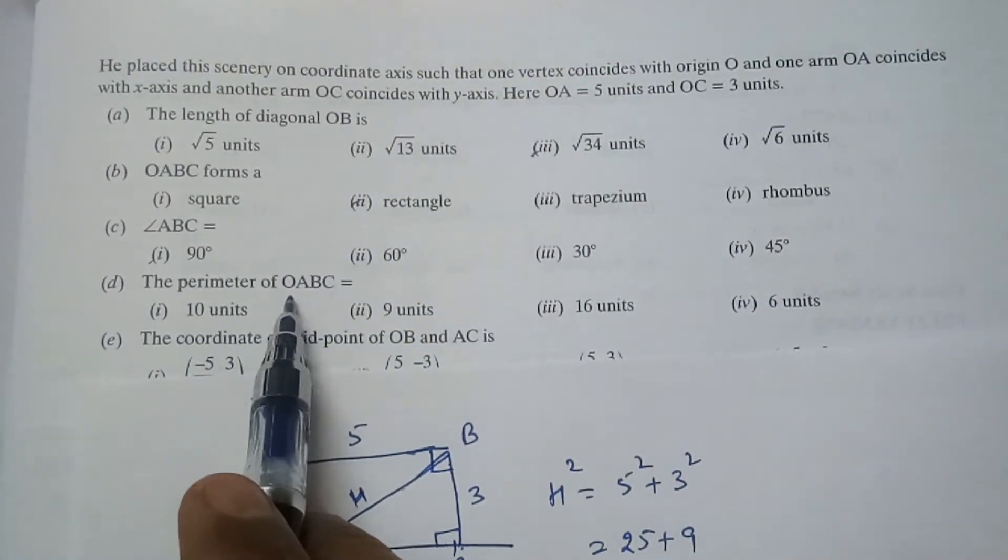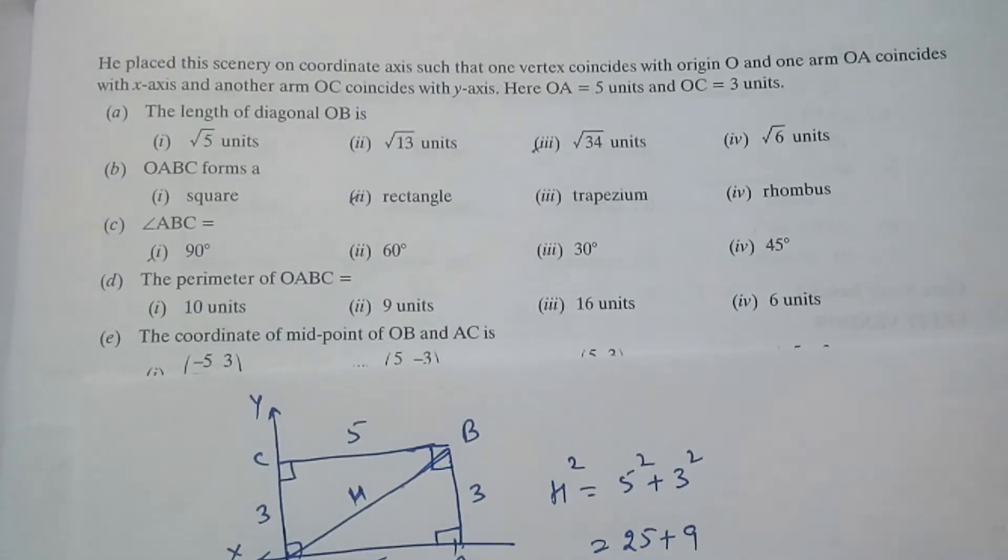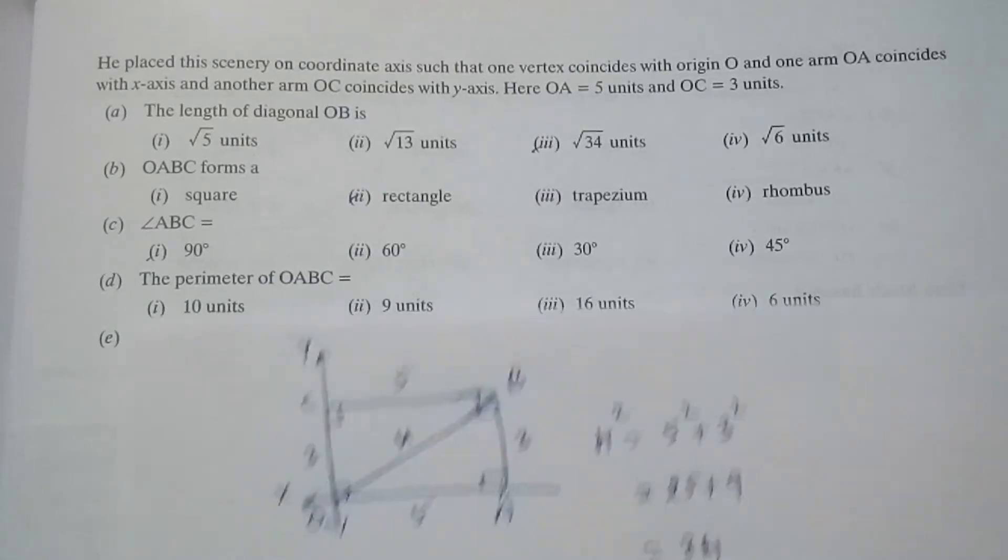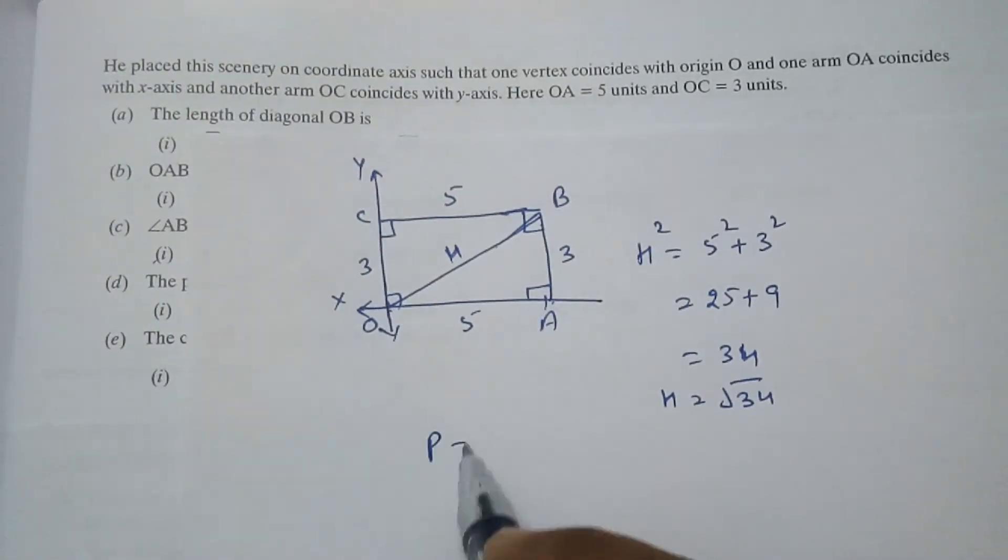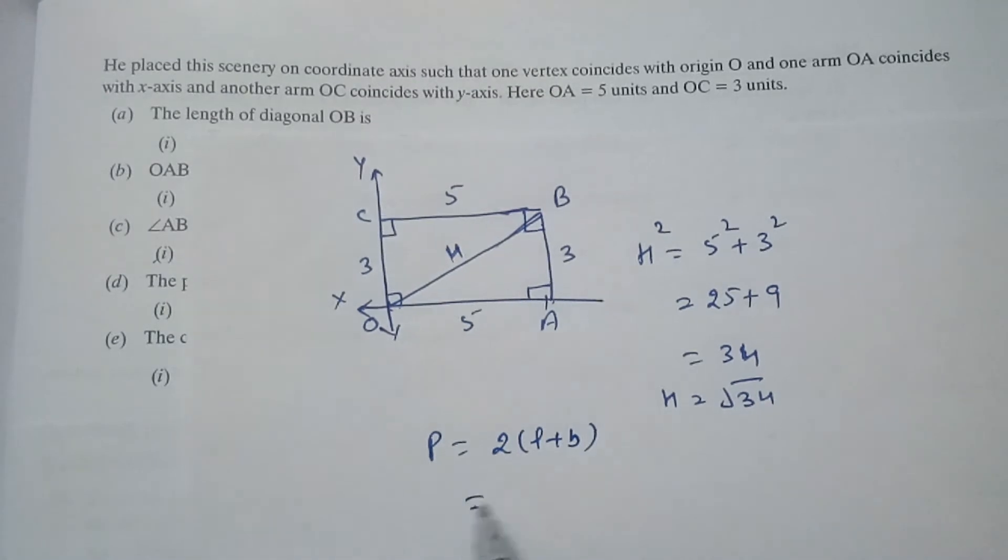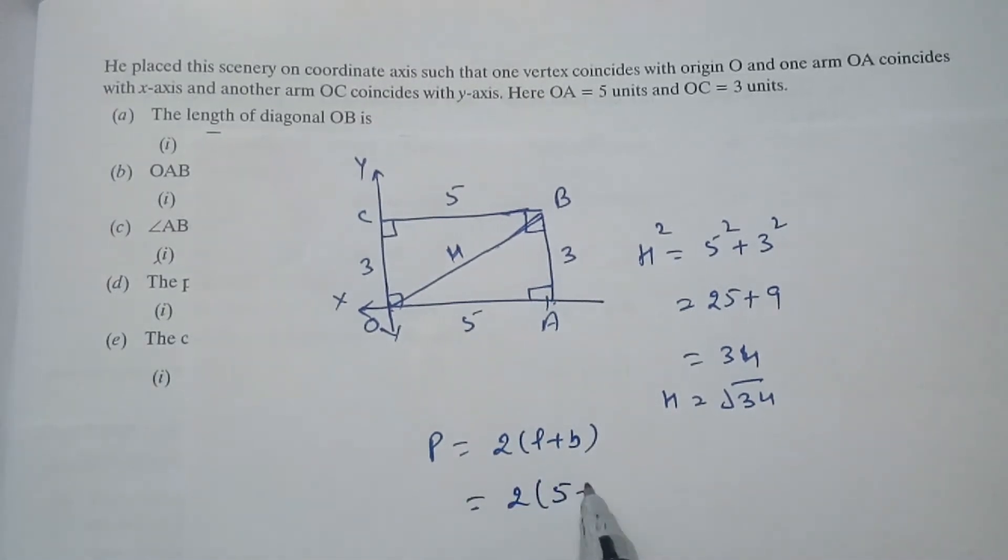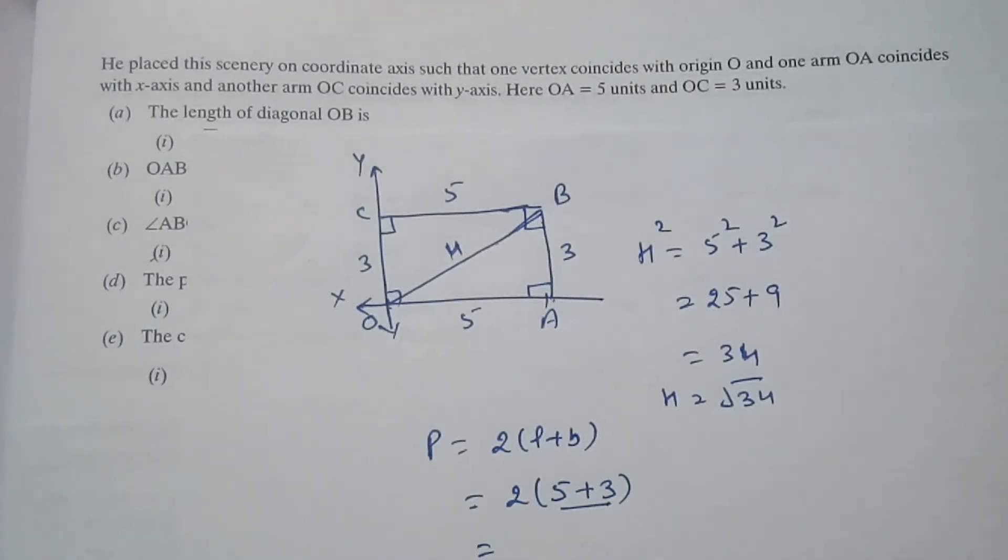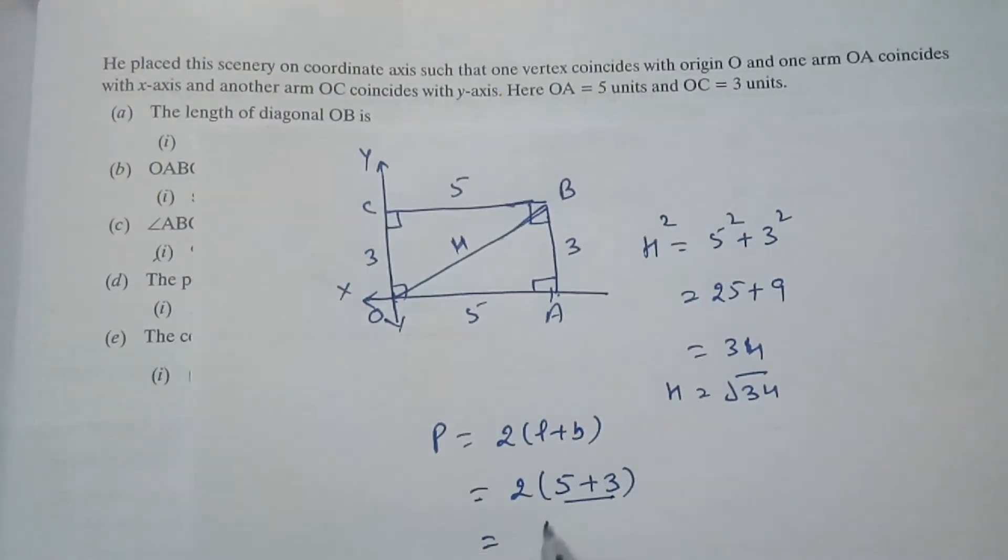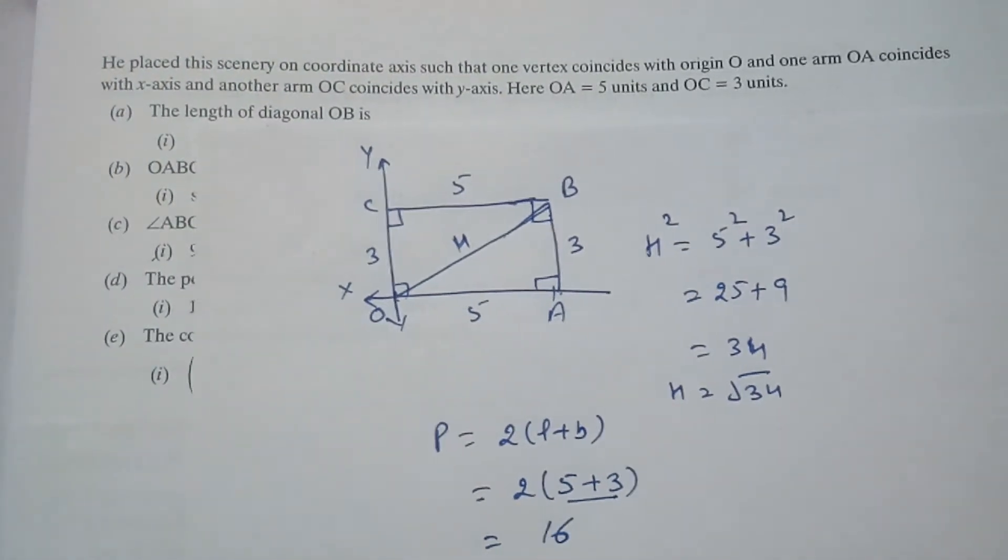Perimeter of this rectangle. So for perimeter we have the formula: perimeter equals to 2 into L plus B. 2 into length is 5, breadth is 3. So 3 plus 5 is 8. 2 times 8 is 16. So perimeter will be 16 units.